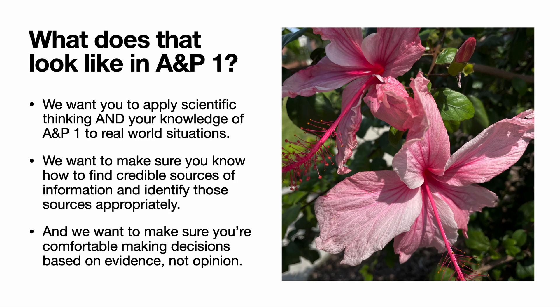So what does scientific literacy look like in a course like A&P 1? We want you to be able to apply scientific thinking and use your knowledge from the course to real-world situations. We also want to make sure that you know how to find credible sources of information — this is really important in the scientific discipline and in all academic disciplines — and that you know how to identify those sources appropriately.